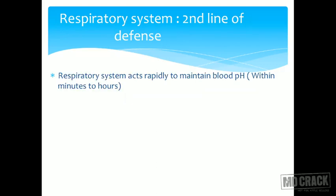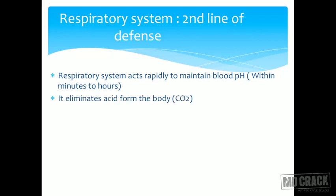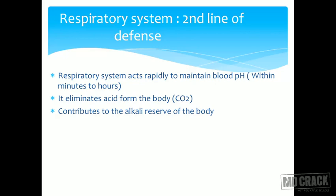The respiratory system — the second line of defense — can act rapidly to maintain blood pH. Imagine you are exercising: immediately during exercise, more carbon dioxide and more lactic acid are produced, so you start hyperventilating to throw out that carbon dioxide. The buffer is transporting CO2 from tissues to lungs; hemoglobin is also helping in this transport; all the proteins help in transport; the chemoreceptors get stimulated and hyperventilation throws out the carbon dioxide. It acts within minutes.